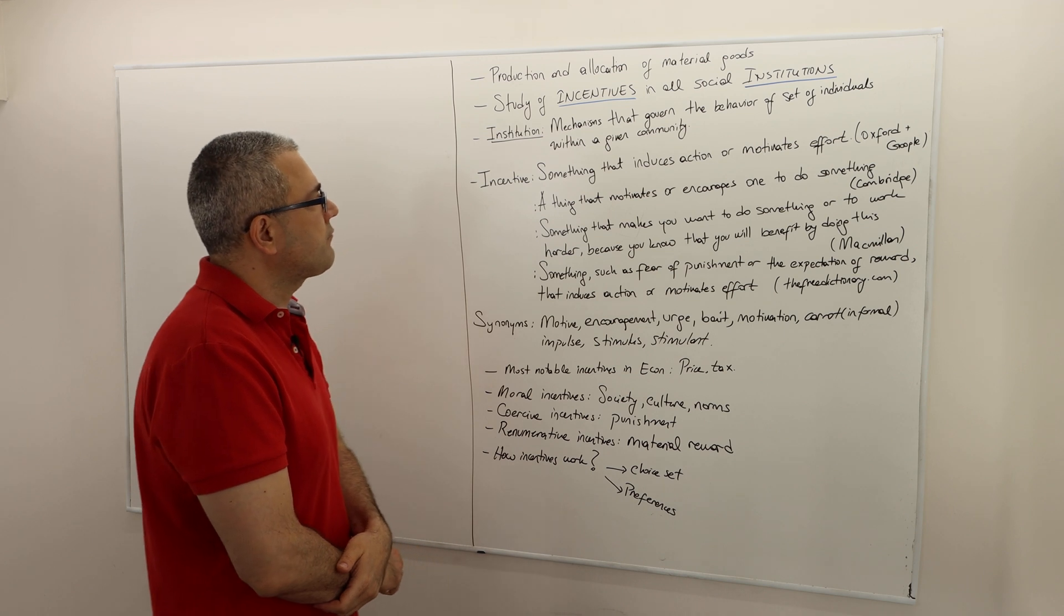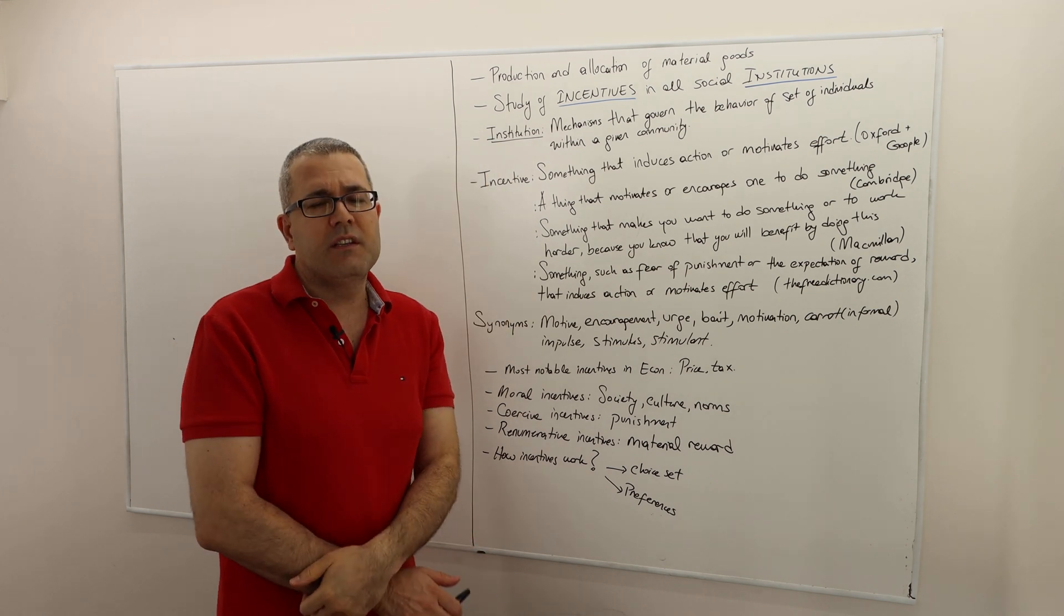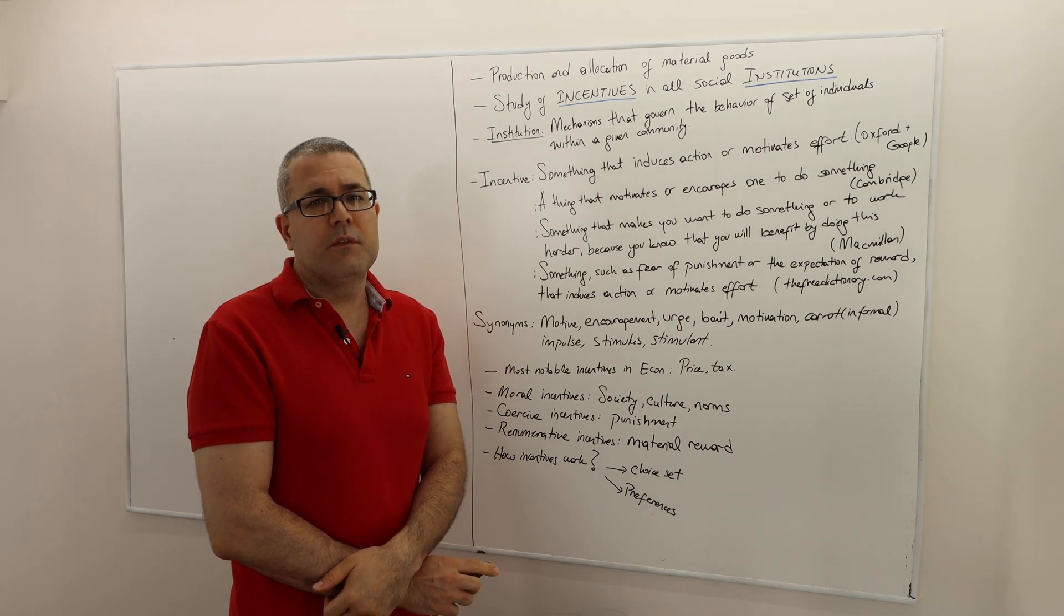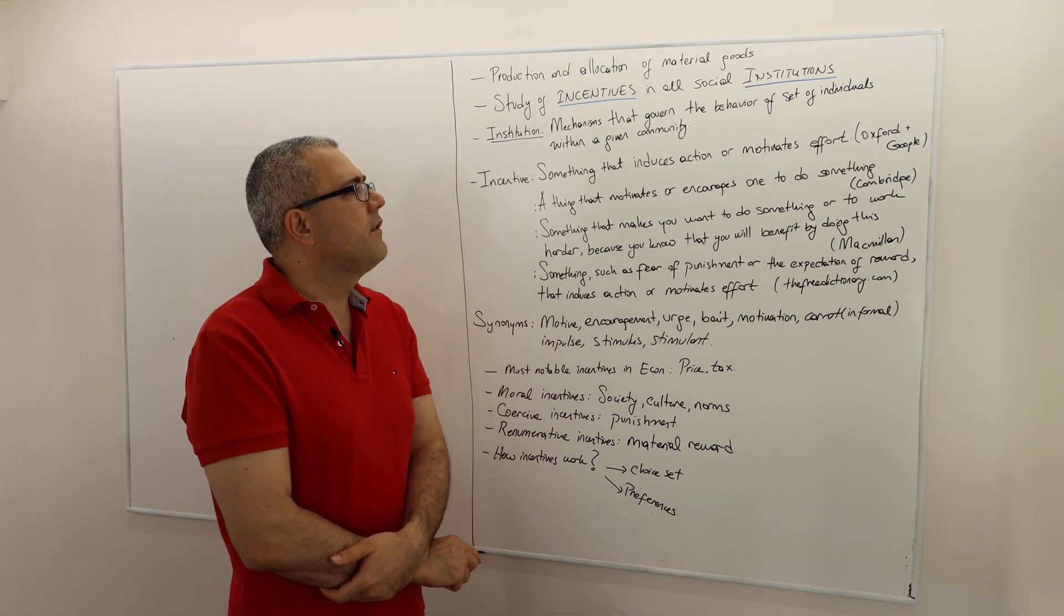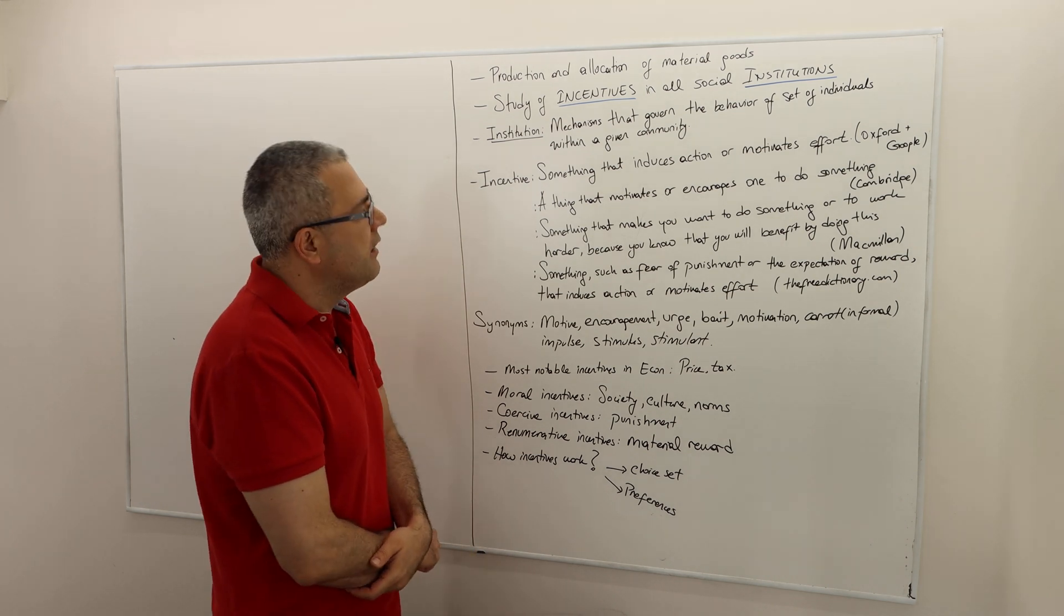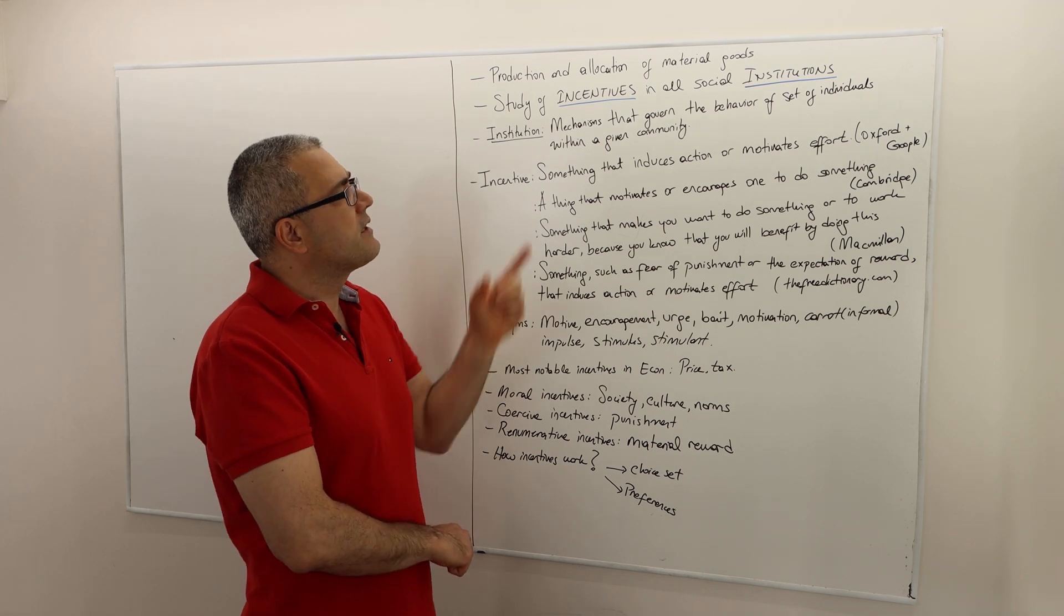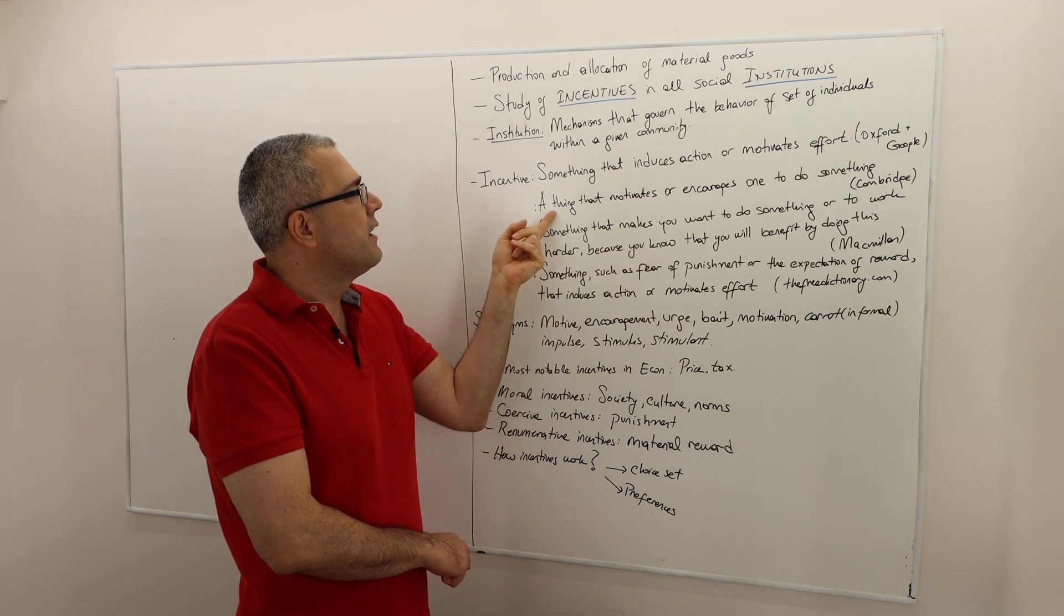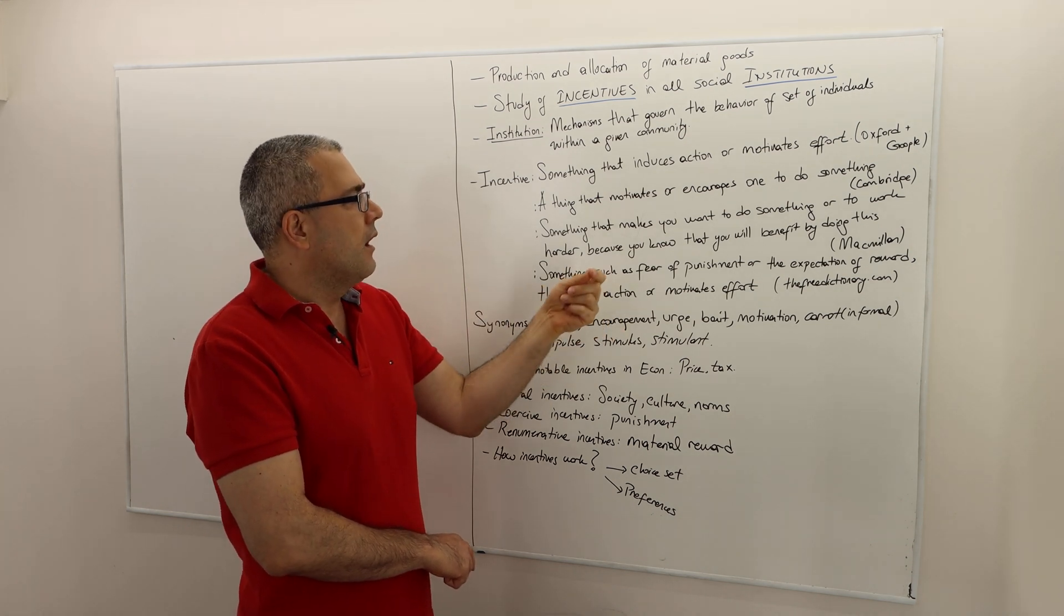The second big word in this description is incentive. What is incentive? It's hard to answer this question because I don't think economists have a well-rounded description for incentive. However, I borrowed a few definitions from dictionaries. According to Oxford and Google, incentive is something that induces action or motivates effort. According to Cambridge dictionary, incentive is a thing that motivates or encourages one to do something. According to Macmillan dictionary, incentive is something that makes you want to do something or work harder because you know you will benefit by doing this.